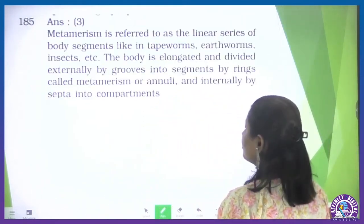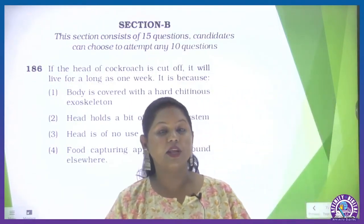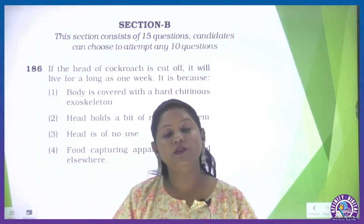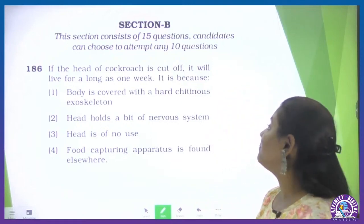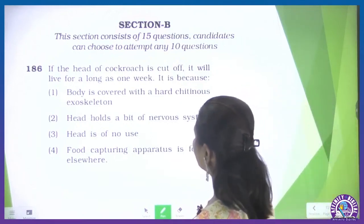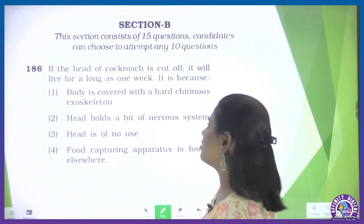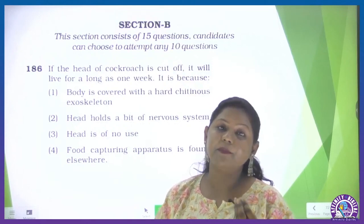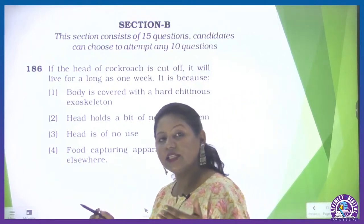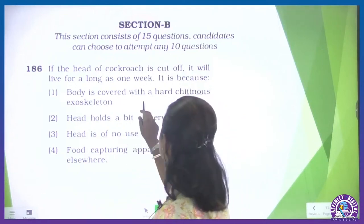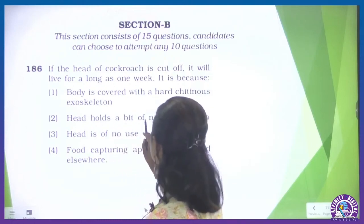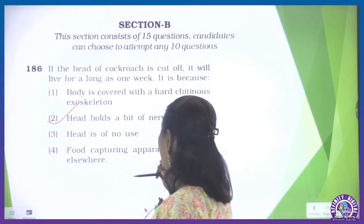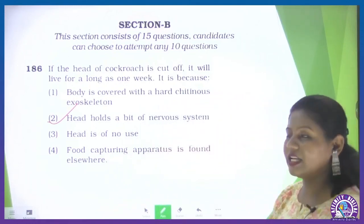We have completed section A. Now we start section B — in section A every question is mandatory, while in section B you get a selection: 15 questions are given and you must attempt 10 selectively. Question 186: if the head of a cockroach is cut off, it will live for as long as one week. This is because the head of a cockroach contains very little nervous tissue — most is in the body. The correct answer is that the head holds only a bit of the nervous system — second option is correct.